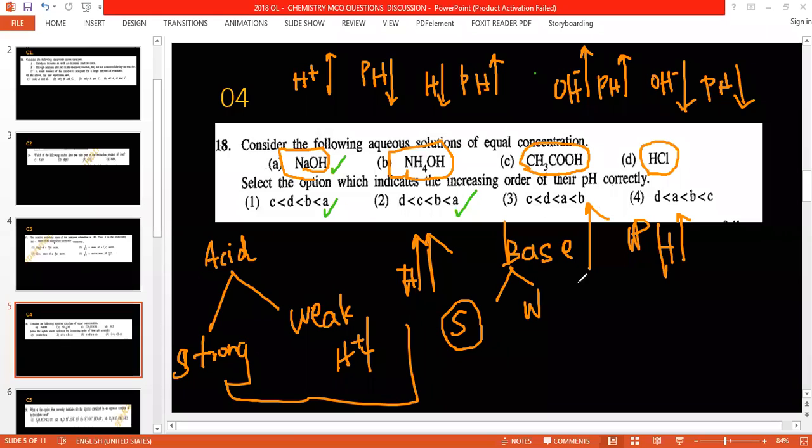And also you must know acid should have a pH value very much low. Which acid would have very much low? Strong acid. Which is strong acid here? Hydrochloric acid. It should have very much lower pH and this should be the final one.